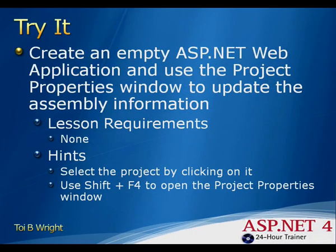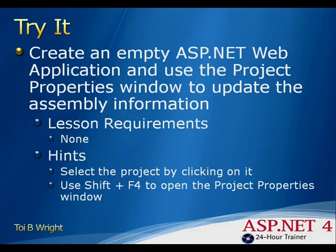In this tutorial, you create an empty ASP.NET web application and use the Project Properties window to update the assembly information for the application. There are no lesson requirements. Your hints are: don't forget to select the project by clicking the project's name in the Solution Explorer, and you can use Shift+F4 to open the Project Properties window.